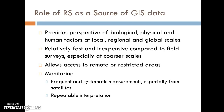Remote sensing is a really important source of data for GIS. It provides a perspective on various biological, physical, and human elements at different scales, including very broad scale — the West Coast region, for example, can be captured on a single image. It's relatively fast and inexpensive compared to field surveys. It allows for remote access to areas you might not be able to get to otherwise, and it allows for repeatable interpretation of things on the ground.